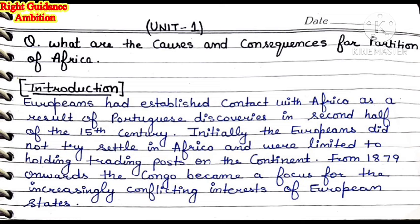Without wasting more time, let's start with our topic. Unit 1 — the remaining question is: what are the causes and consequences of the partition of Africa? First, you have to write an introduction. Europeans had established contact with Africa as a result of Portuguese discoveries in the second half of the 15th century. From 1879 onwards, the Congo became the focus for the increasingly conflicting interests of the European states.